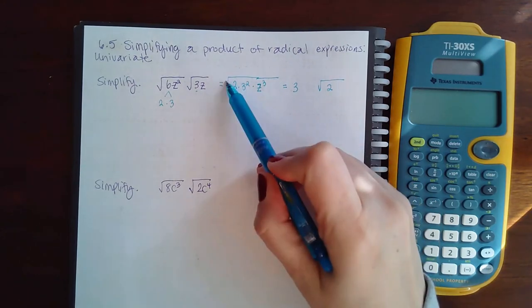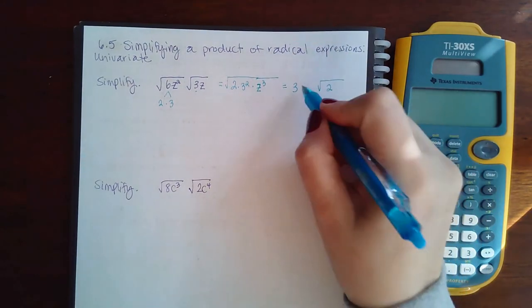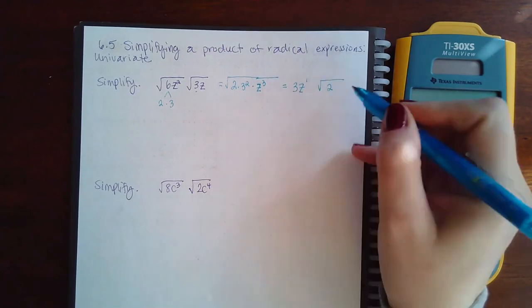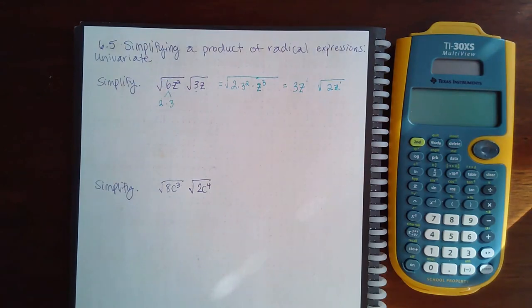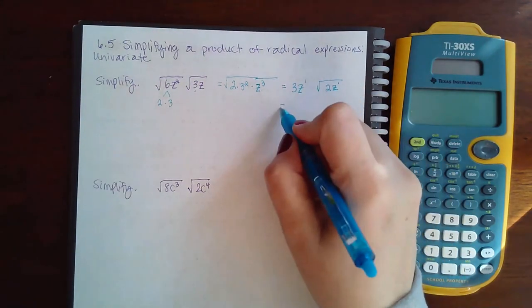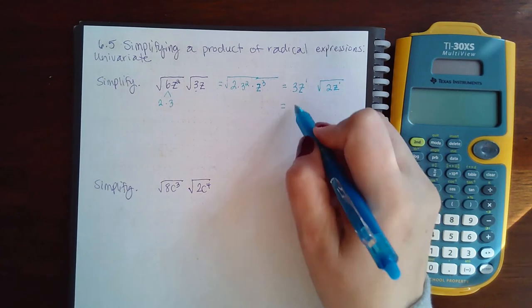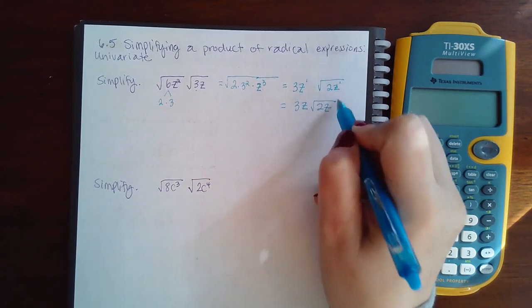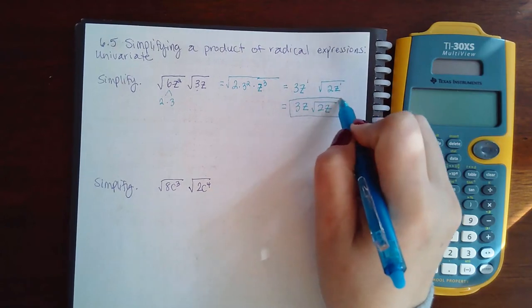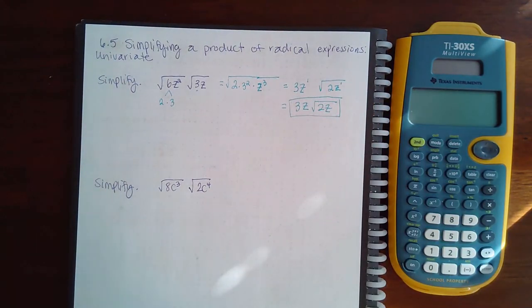When I do the square root of z to the third, 2 will go into 3 one time so 1 z will come out, but I will have 1 left over so 1 will stay in. To clean that up, remember we don't need to put 1 powers, so it's just 3z and 2z.